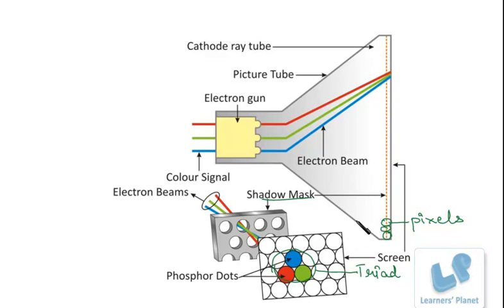Now here the electron guns, they blaze across the screen row by row. And they illuminate the phosphors. And varying the beams intensity, it strengthens or weakens the glow from a given phosphor dot. That means the red, green or blue phosphor dot.